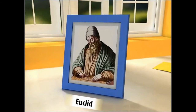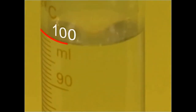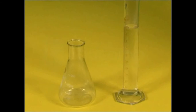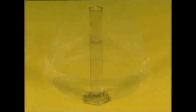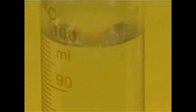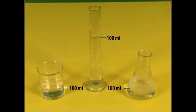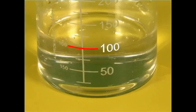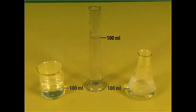To understand his first axiom, consider a beaker cylinder containing 100 ml of water. If you pour this water into a conical flask, and pre-fill the beaker cylinder with another 100 ml of water and pour this into a beaker, then the volume of water in the conical flask and beaker remains the same. This helps to understand Euclid's first axiom, which states that things which are equal to the same thing are equal to one another.